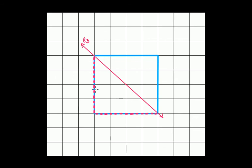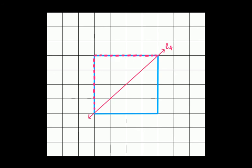When you fold it, it exactly forms the mirror image — that is what we have shown by the dotted lines. Similarly, we have one more line of symmetry L4, just opposite to the previous diagonal. If we fold this side on the other portion, this vertex will exactly lie here, this line will exactly overlap with this one, and this line will exactly overlap with this one. Therefore we have four lines of symmetry in total.